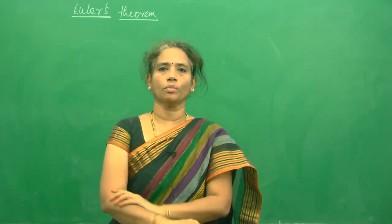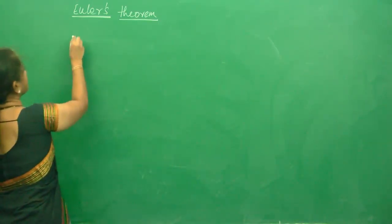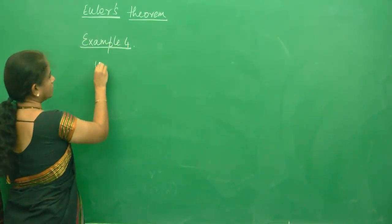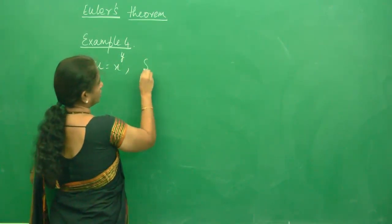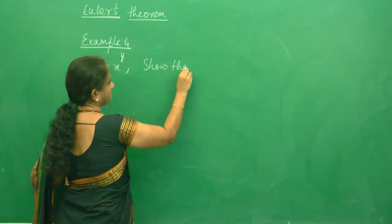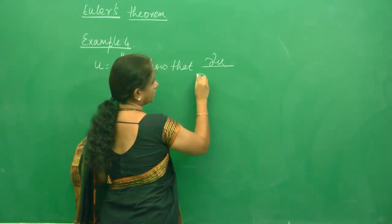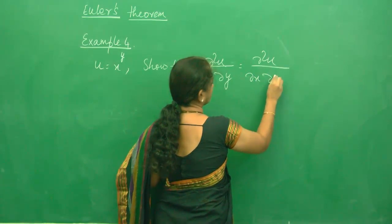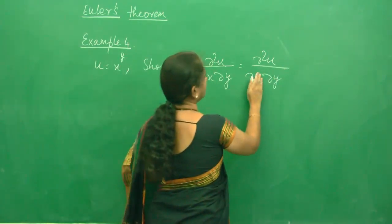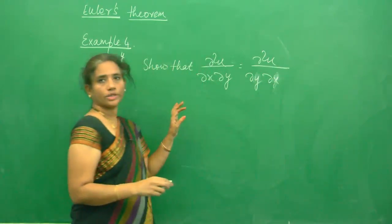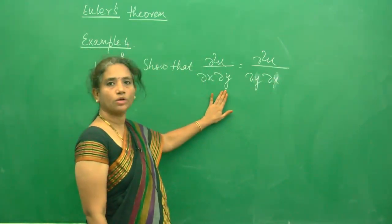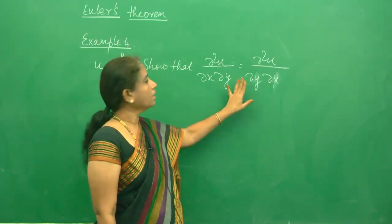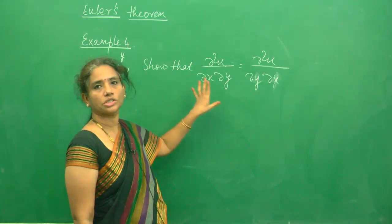Hi everybody, we will solve one more problem in partial derivatives. You are given u = x^y and you are supposed to prove that ∂²u/∂x∂y equals ∂²u/∂y∂x. In this question, we mean to say differentiating with respect to y then x gives the same result as differentiating with respect to x then y — though this is not always true. For this particular question, it is true.